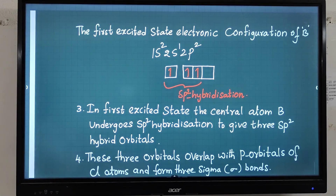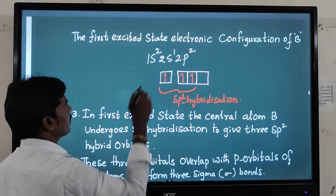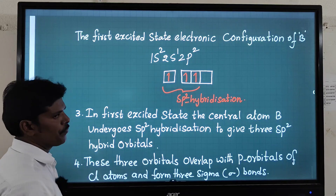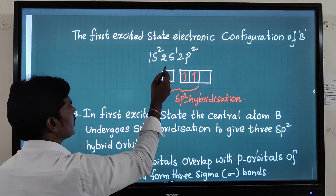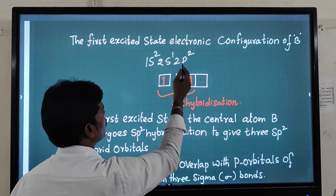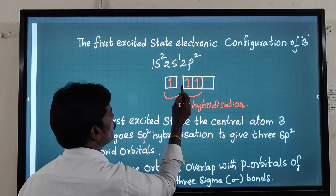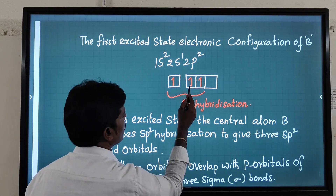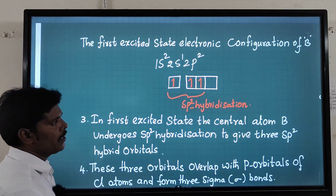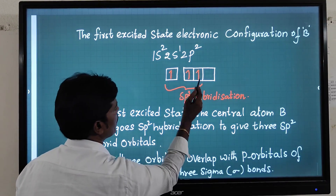After gaining energy, boron produces this excited state electronic configuration: 1s², 2s¹, 2p². The s orbital has one single electron. The 2p² means two p orbitals are occupied. According to Hund's rule, one electron goes to one p orbital and one electron to another p orbital. So we have one s orbital and two p orbitals — that gives sp2 hybridization.